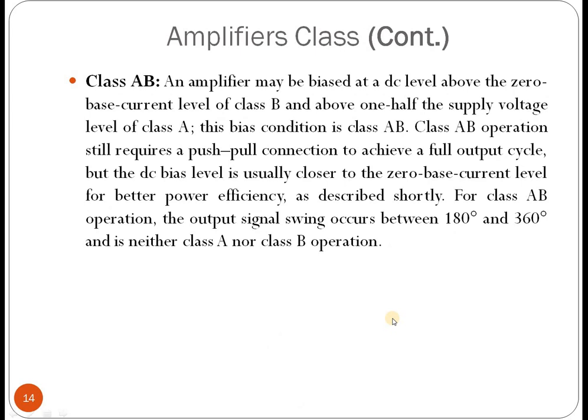Another amplifier class is Class AB. This type uses a bias condition between the zero base current level of Class B and the half-supply-voltage level of Class A. Class AB operation requires push-pull connections to achieve the full output cycle, and the DC bias level is usually closer to the zero base current level for better power efficiency. The output signal spans between 180 degrees and 360 degrees, being a combination of Class A and Class B.